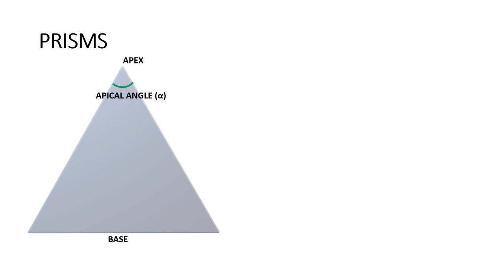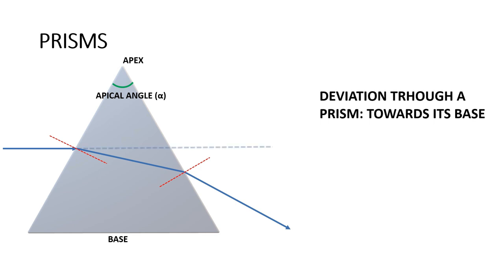Refraction through a prism works as follows: a ray of light hitting the first refracting surface is refracted towards the normal (going from rare to dense medium). At the second refracting surface, the light is refracted away from the normal (dense to rare). Overall, the ray of light coming out of the prism has been refracted towards its base. Thus, refraction through a prism deviates light towards its base. The angle formed between the original path and the new path of light after refraction is called the angle of deviation, denoted by capital D. This angle is the strength or power of the prism — a stronger prism deviates light more.